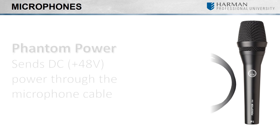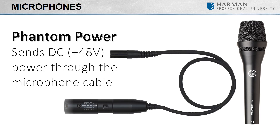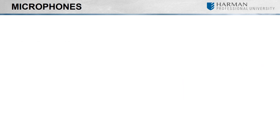Do keep in mind that condenser microphones require phantom power. Phantom power is a method of sending DC voltage through the mic cable to power the microphone. Most condenser microphones require 48 volts of phantom power. When using a condenser mic, make sure your mixer or DSP is capable of delivering phantom power to the mic.